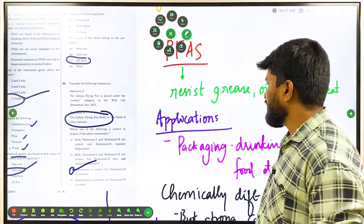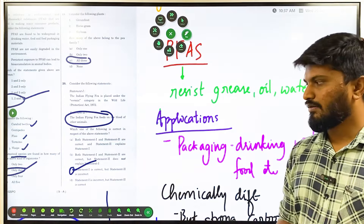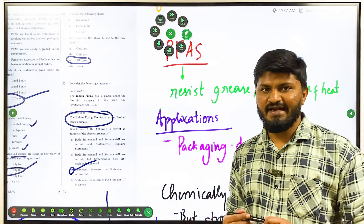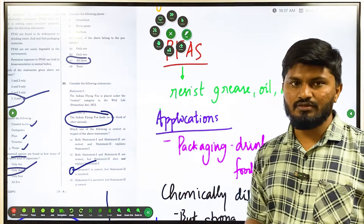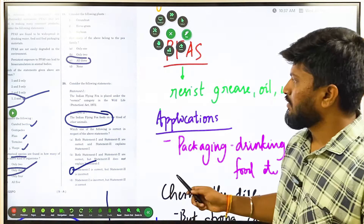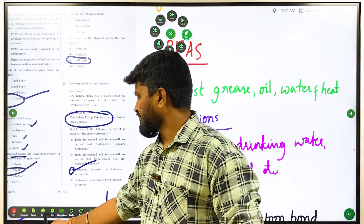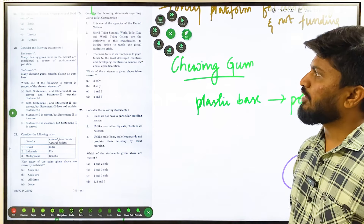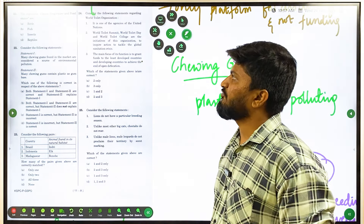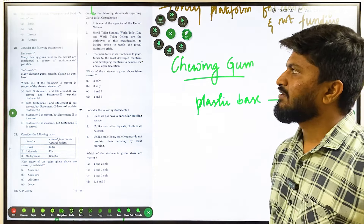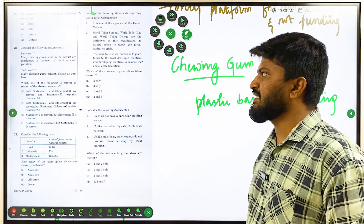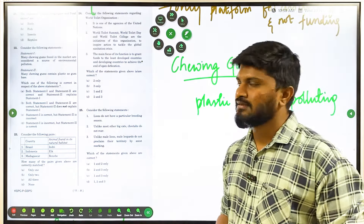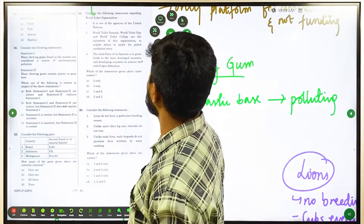In the Environment section, be thorough about the Wildlife Protection Act, Biodiversity Act, and other important acts — every year there is at least one question from these acts. Question 21 asks: cicada, frog hopper, and pond skaters are — birds, fish, insects, or raptors? Just by knowing cicada and frog hopper, you can answer this. The correct answer is C — insects.